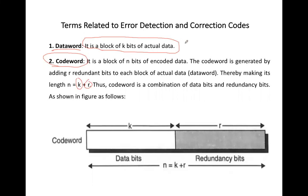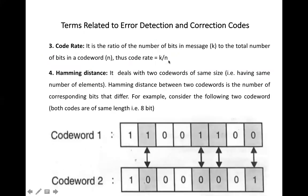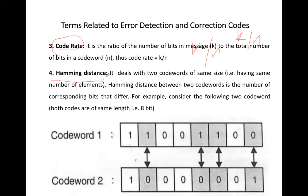Data word is the total number of bits of actual data. Code word means the total number of bits of actual data plus the redundant bits added. The next term is code rate, which means k divided by n — that is, the total number of actual data bits (k, the data word) divided by the code word (n). Dividing the data word by the code word gives you the code rate.